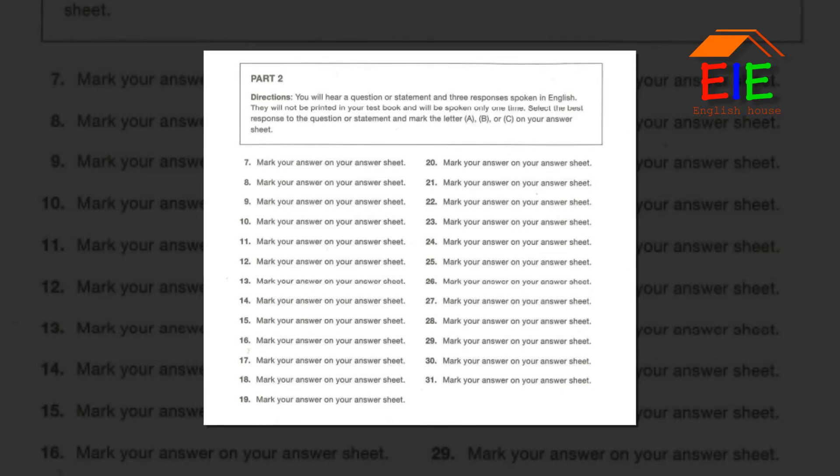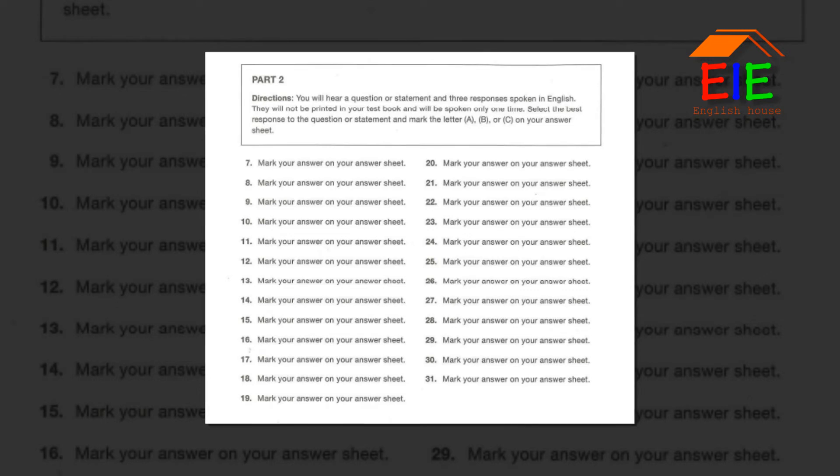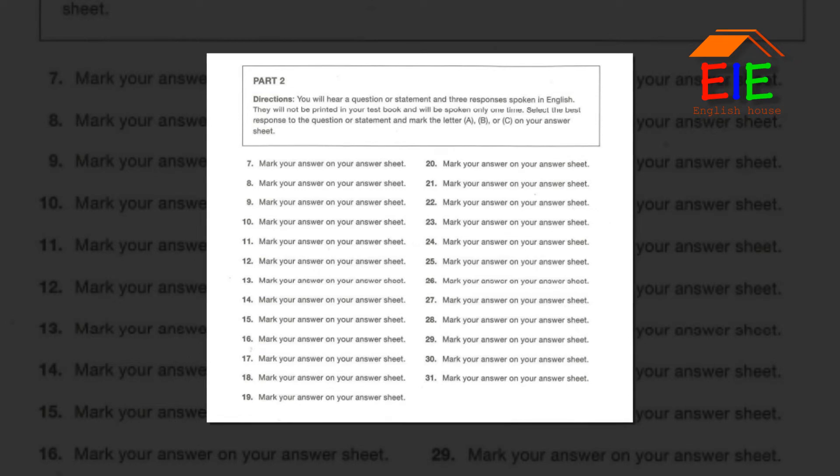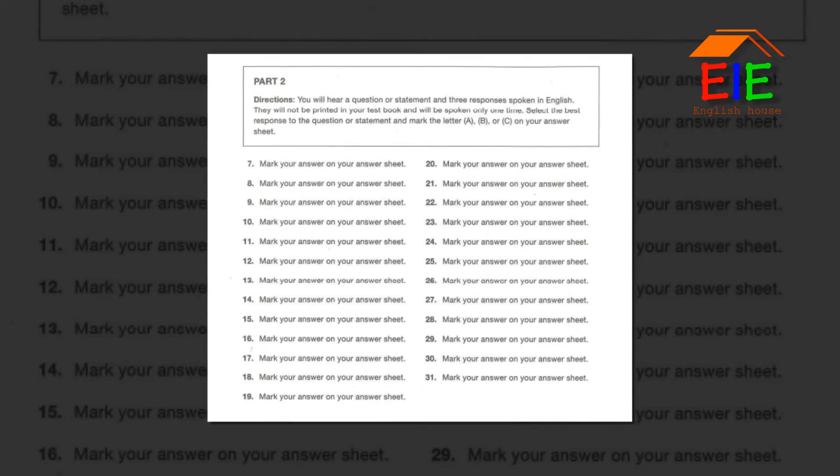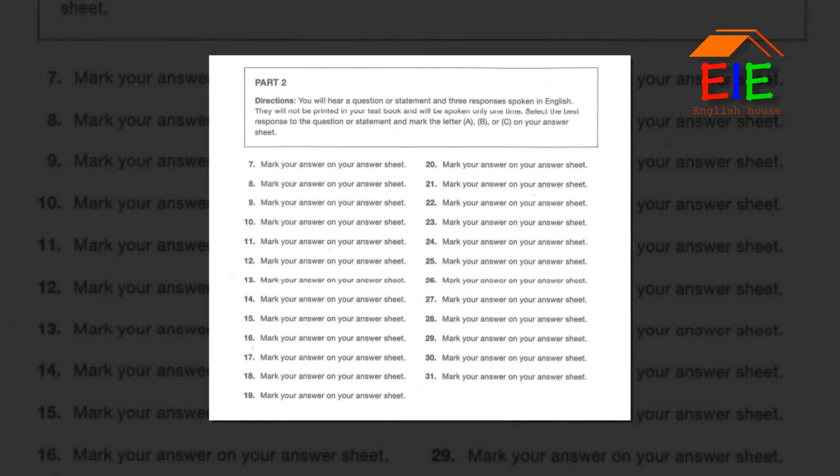Number 20. Are you going to the museum or watching the baseball game? A. About 30 euros. B. I don't like sports. C. Put your name here, please. Number 21. Would you like me to review the budget report before you submit it? A. No, I don't know him. B. Yes, that'd be helpful. C. At least $500.